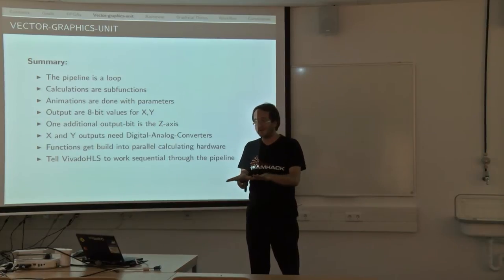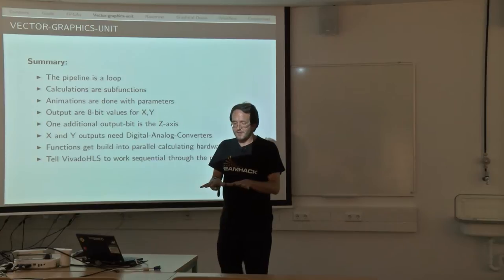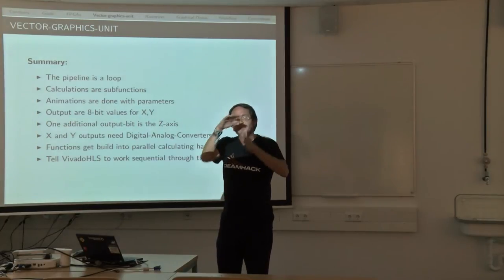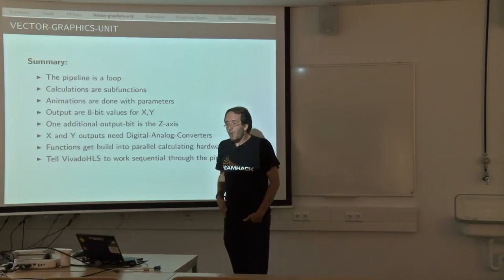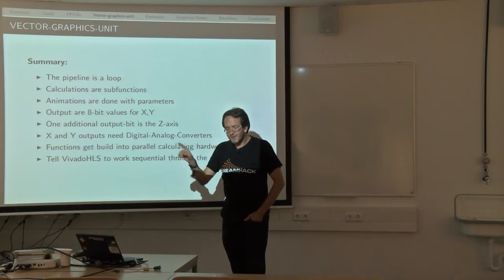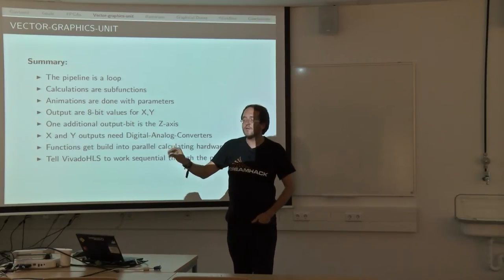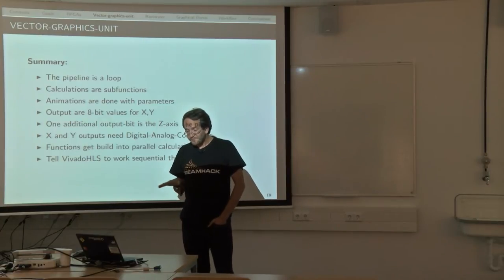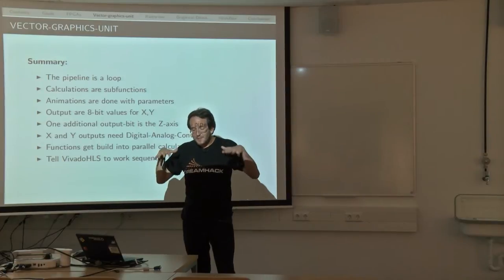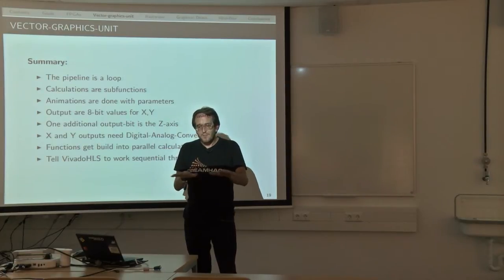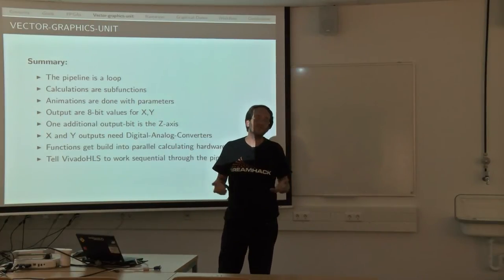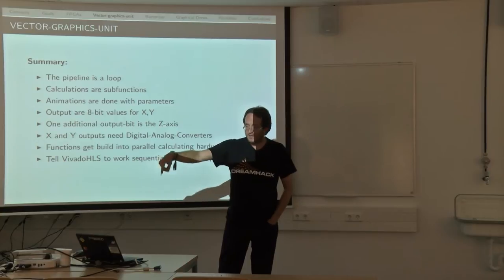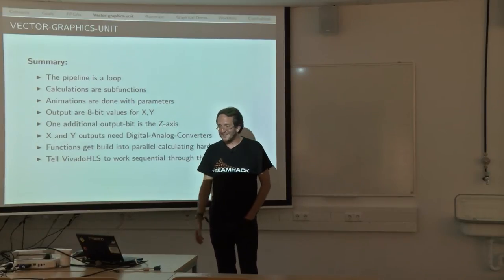That is the output of the vector graphics unit — the X and Y values fed into the deflection unit of our cathode ray. One additional output, only one bit, is needed for turning the beam on and off to make it dark or bright. These eight-bit values for X and Y are parallel on the pins, so we need to convert them to X and Y voltages using digital-to-analog converters, which are separate units around the board.